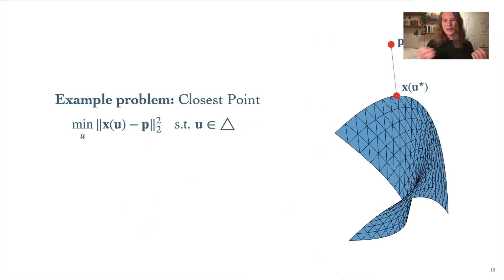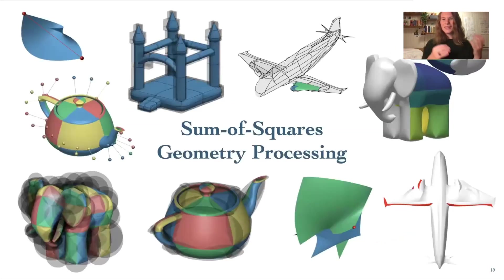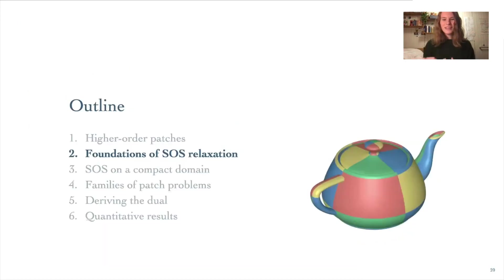Now let's look at a specific example of how we might formulate a geometric operation on a patch. So here I'm going to look at the closest point problem. The definition of this problem is that we have some point p in our space, and we want to find the point u* in the domain that maps to the closest point on the patch to that point p. And so notice that this formulation is simply a minimization of a polynomial with some additional constraints. So in our paper, we show how to solve this closest point problem and also all these other geometric operations on polynomial patches. In order to do this, we first have to talk a little bit about the theoretical core of our work.